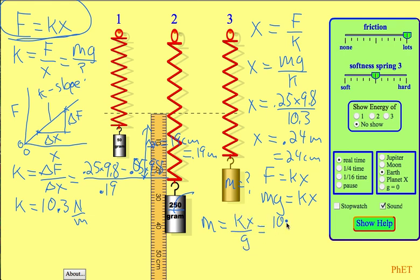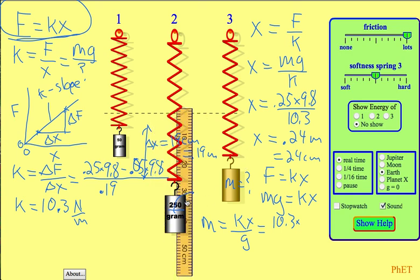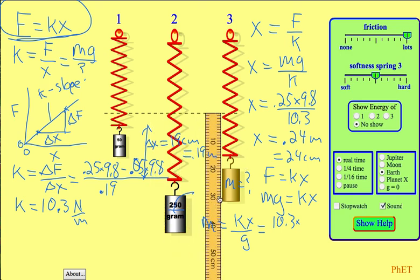And so we go 10.3 times how much the mystery mass stretched from the unstretched position. So we needed to know where this dotted line was to be able to do this one. That's why we waited until the end. And so now if we measure it, where is the bottom of the spring? I got 15.5 centimeters. And so that didn't mean to do that. And so I got 15.5 centimeters for how much it stretched. And so that would be 0.155 meters. So again, this distance here, 15.5 centimeters. And so x is 0.155 meters. So that's what needs to go here.